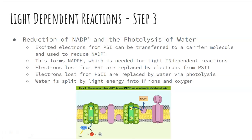All these things don't happen one step at a time — this is continuously happening. As the ATP synthase is rotating, you are continuously sending de-energized electrons from PS2 to PS1. While that is happening, you are continuously breaking down the water, releasing oxygen as a waste product, and taking up new electrons. We're just breaking it down into steps because it's easier to understand the order and the process, but all of this happens pretty much at the same time.